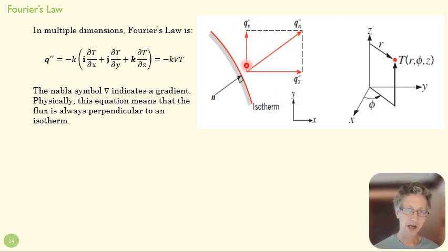...the isotherms were along that sort of curved section, we would expect that the energy would move across those isotherms perpendicular as it moves from the hottest place as quickly as it can to the coldest place.